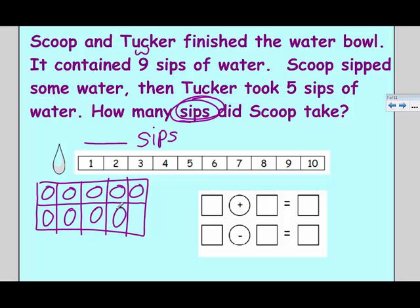So now Scoop sips some water. I have nine, and Scoop sips some, and I have no idea how much Scoop sipped. That's what we're trying to find out. But I know Tucker also sips some water. So I think those are going to be our parts. Scoop's sum is going to be our part, and Tucker's five sips are going to be a part. So it seems like Scoop and Tucker's five sips should make nine.